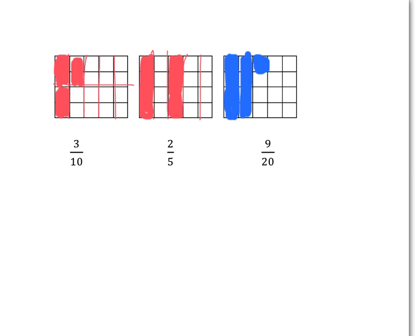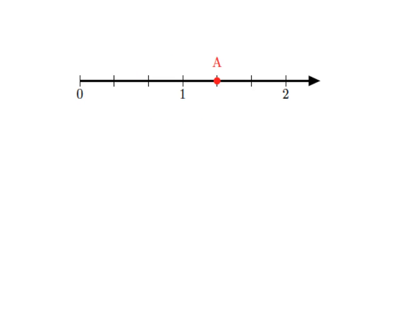So you'd have a picture something like that. If we want to know what point A is on the number line, we can first look and see how many pieces our unit — the gap between zero and one — has been divided up into. We can see it's been divided up into three pieces, so we're dealing with thirds. How many thirds have we moved when we get to A? We've gone one-third, two-thirds, three-thirds, four-thirds. So A is four-thirds.